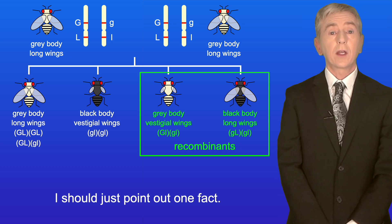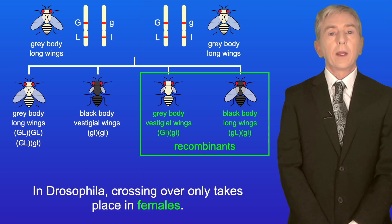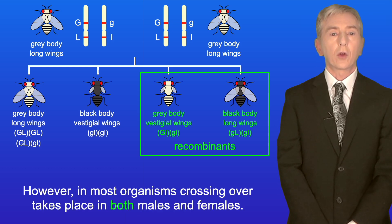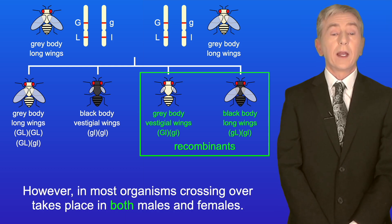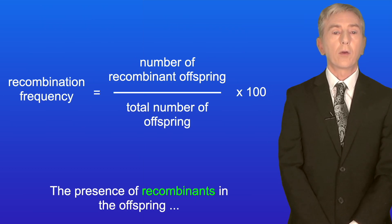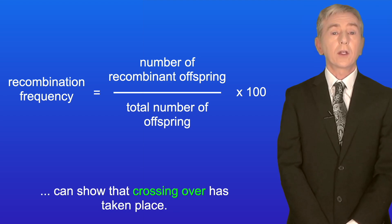One important fact to note: in Drosophila, crossing over only takes place in females. However, in most organisms crossing over takes place in both males and females. The presence of recombinants in the offspring can show that crossing over has taken place.